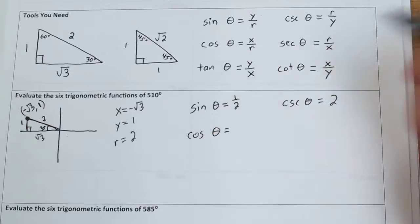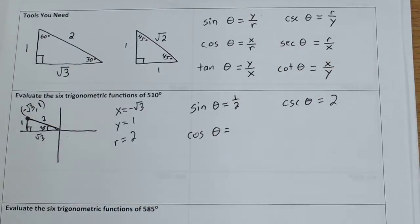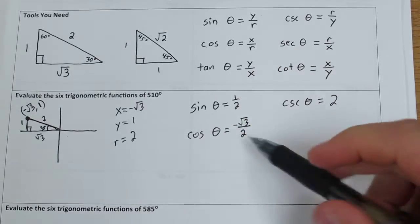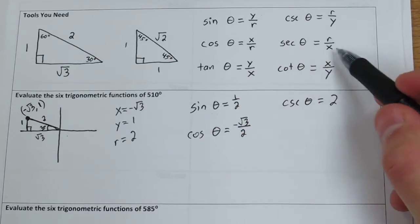Cosine theta is x over r, so that's going to be negative rad 3 over 2. The reciprocal of this, r over x, is what secant theta is going to be.